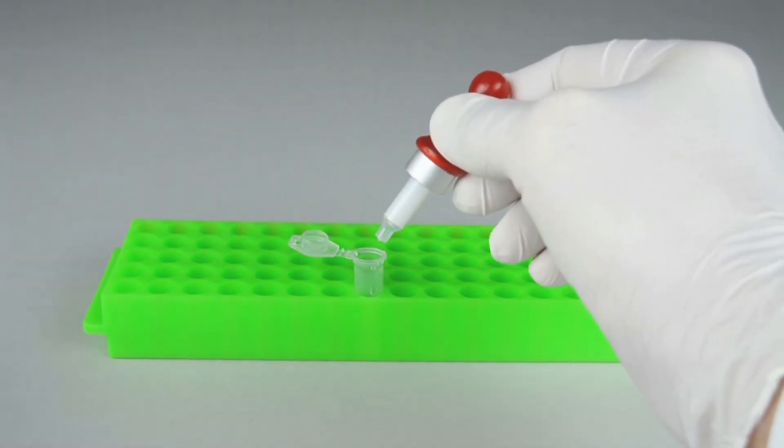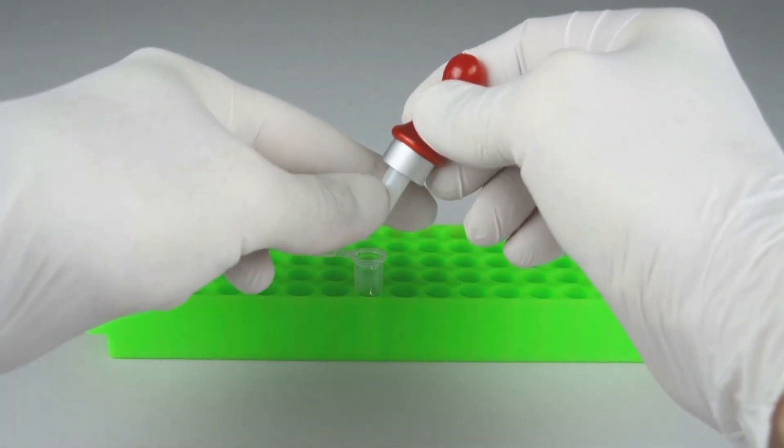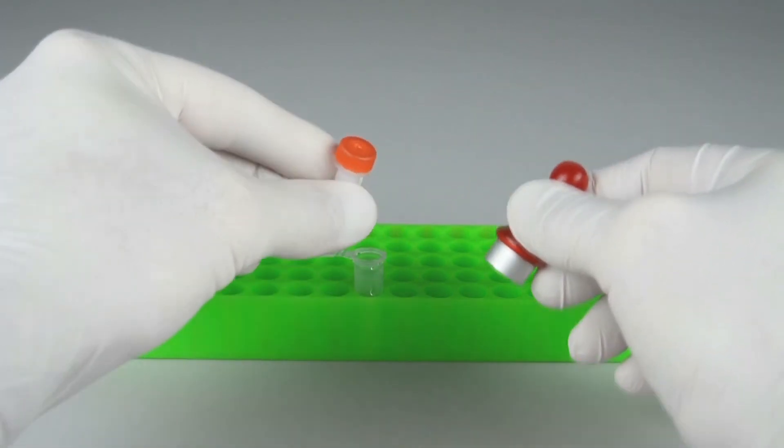Then simply detach the cap puncher by twisting off clockwise. As you can see, the column cap has been pierced.